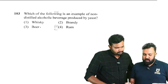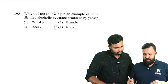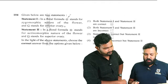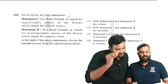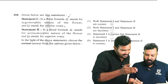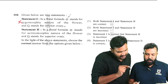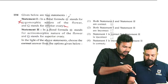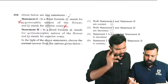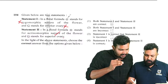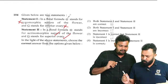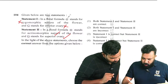Question number 103: which of the following is an example of a non-distilled alcoholic beverage produced by yeast? The answer is option three — beer. Question number 104: statement one — in the floral formula, a symbol stands for zygomorphic nature, not actinomorphic. Statement two — in a floral formula, the superior and inferior ovary symbols are discussed. Of the two statements, statement one is incorrect but statement two is correct — option four is the right answer.